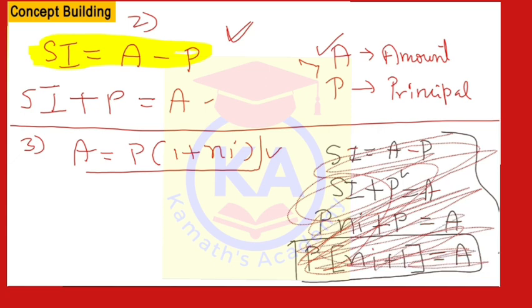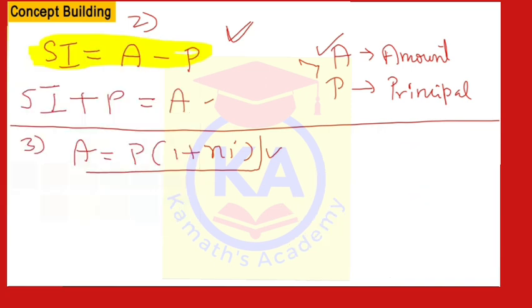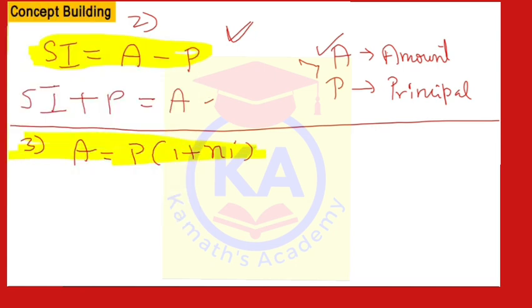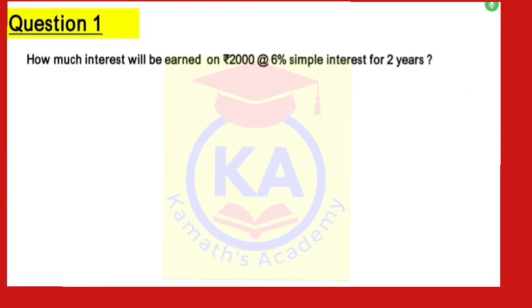Please note all these formulas — there are only three formulas. Now we will start with the problems on simple interest. I have given eight questions covering different types. We are focusing on different types, not just the number of questions. If you solve all eight problems, 100% of simple interest will be done.